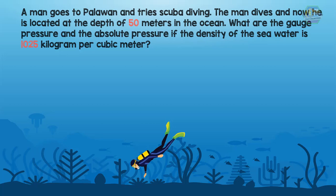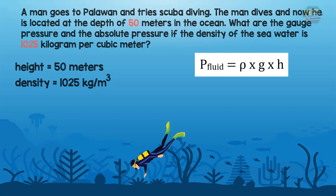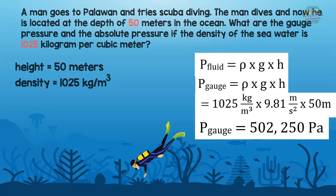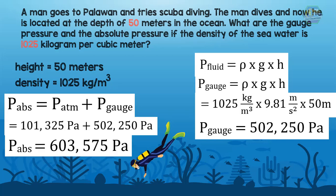Let's identify the givens: height of 50 meters and density of 1,025 kilograms per cubic meter. Recalling the fluid pressure formula — density times gravity times height — we use this to find the gauge pressure since the man is in water. The gauge pressure is 502,250 pascals. We can then solve for absolute pressure: absolute pressure equals atmospheric pressure plus gauge pressure, giving 603,575 pascals.